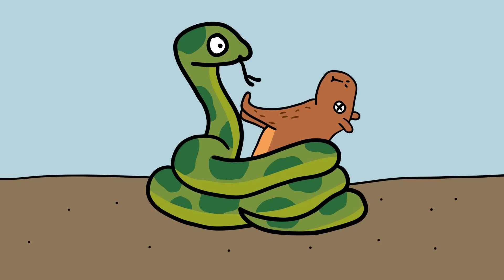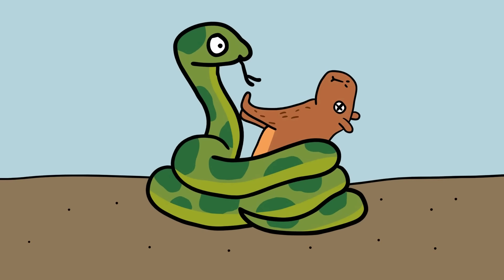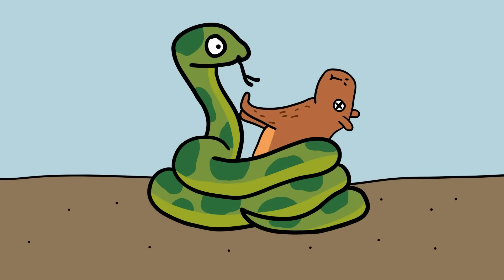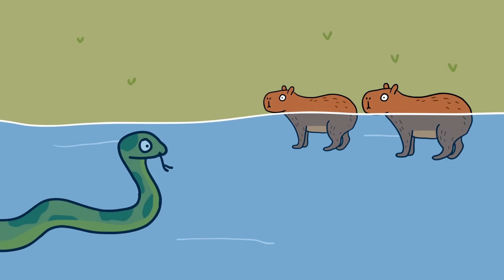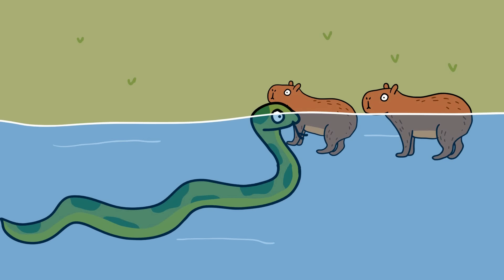They are not venomous, but instead use their immense muscular power to constrict and suffocate their prey, which includes capybara, deer, caiman, and even jaguars. Preferring shallower waters that allow them to stealthily sneak up on their prey, they tend to live in offshoots of the Amazon rather than the river itself.